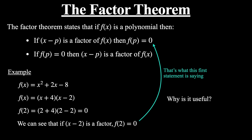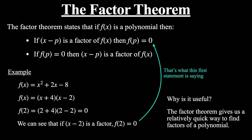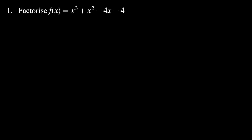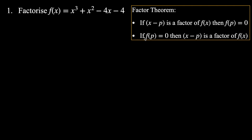So why is the factor theorem useful? One way we can use it is to find factors of polynomials relatively quickly. Consider this question: factorize x³ + x² − 4x − 4. Up to this point you've probably only factorized quadratics, so how can we factorize a cubic? It's not like a quadratic where we can just look at factors of the constant. We can use the factor theorem — specifically the second statement: if f(p) equals 0, then x minus p is a factor of f(x).